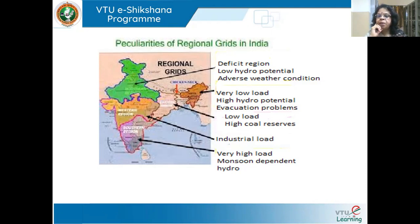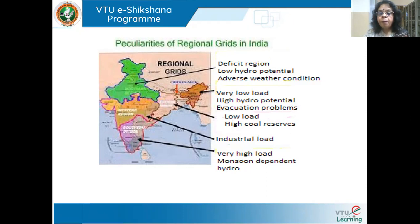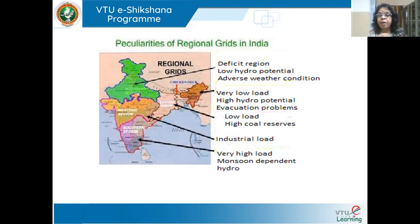The West is highly industrialized. The South is also very industrialized, with IT companies and public sector units, so the load is very heavy. There are also a lot of hydel plants in the South, which are heavily dependent on the monsoon. The point is that in any grid, different regions will have entirely different characteristics, and how you control the grid depends on how the regions are interconnected and where power is being transferred.